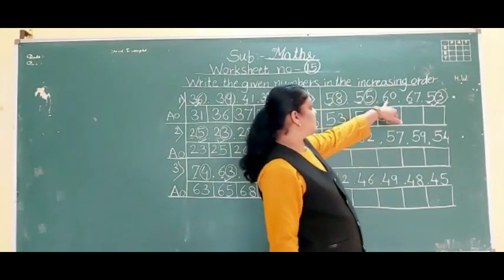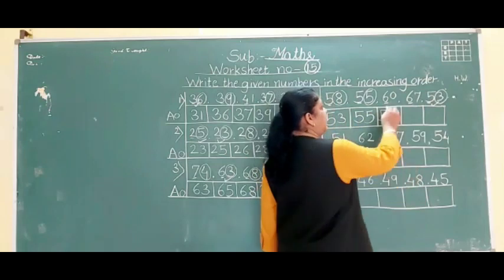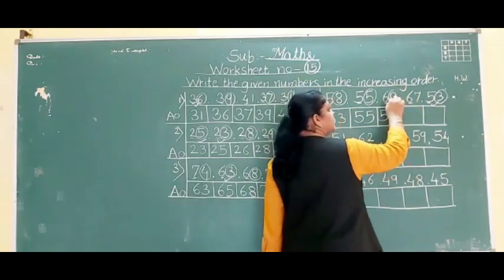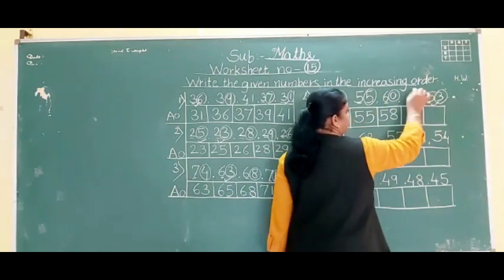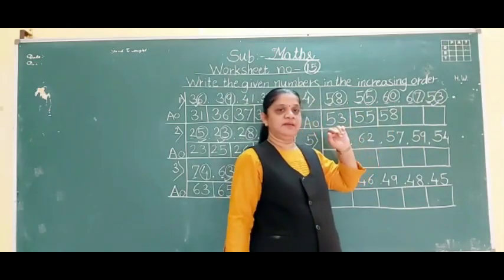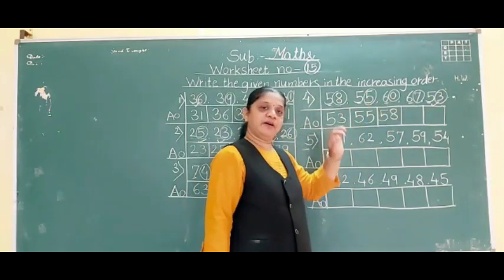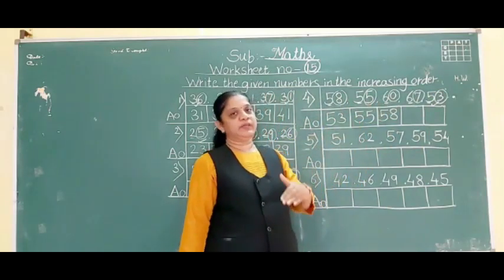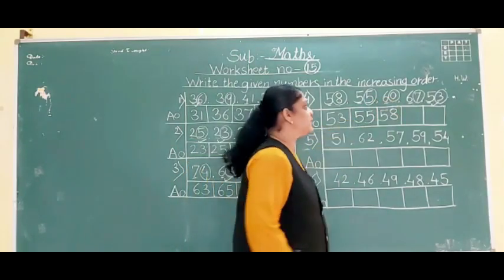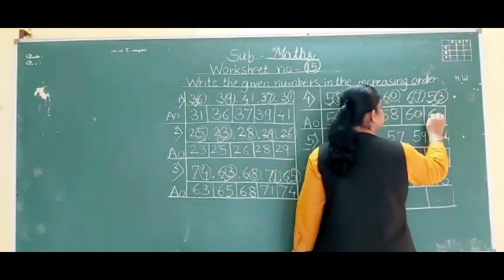Then two numbers with 6: 60 and 67. Second digits are 0 and 7. Obviously 0 is the smallest number — 0, 1, 2, 3, 4, 5, 6, 7 — so 0 comes first. So 60 comes before 67. Last is 67.